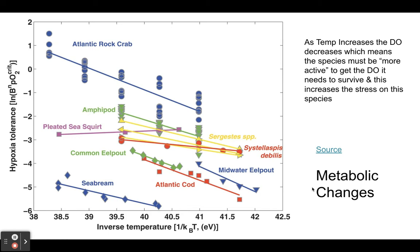Another impact is metabolic changes. There's a complex graph discussing hypoxia and hypoxia tolerance. Hypoxia refers to low levels of dissolved oxygen. As temperature increases, dissolved oxygen decreases, meaning species have to be more active to get the oxygen they need to survive, causing more stress. What researchers are finding is that as temperature warms, the hypoxia tolerance of species is going down — they're less able to survive in low-oxygen conditions — and that impacts their metabolism and their ability to survive.